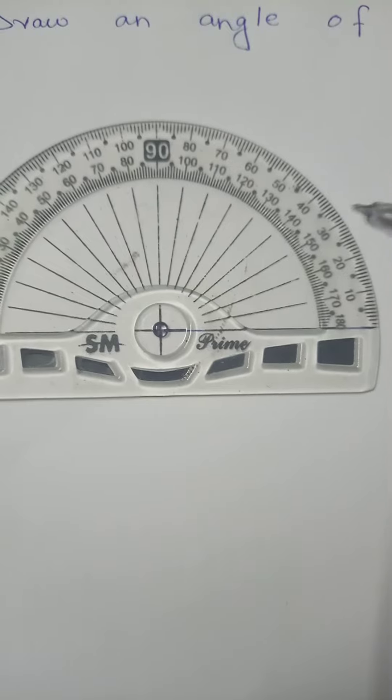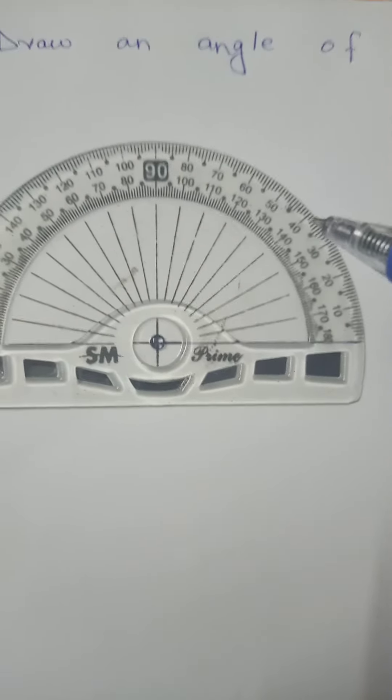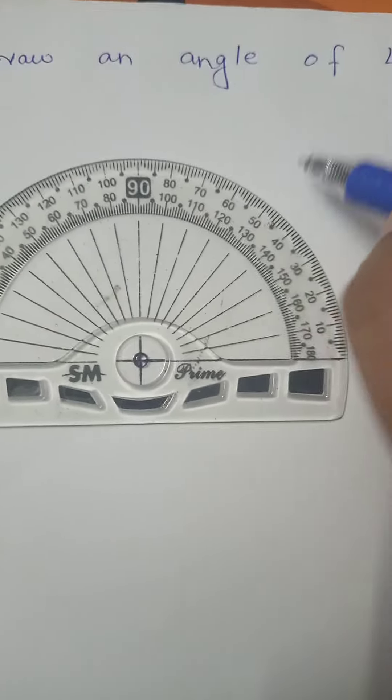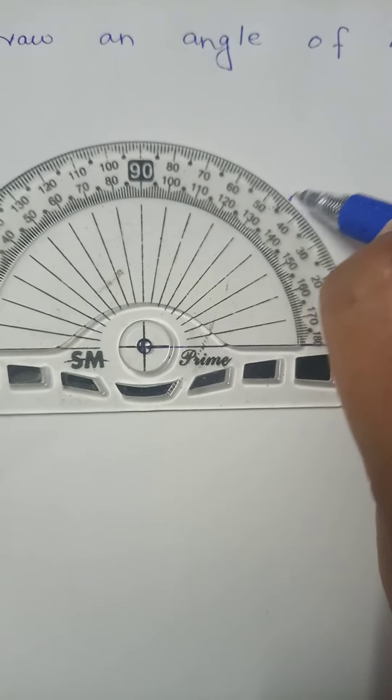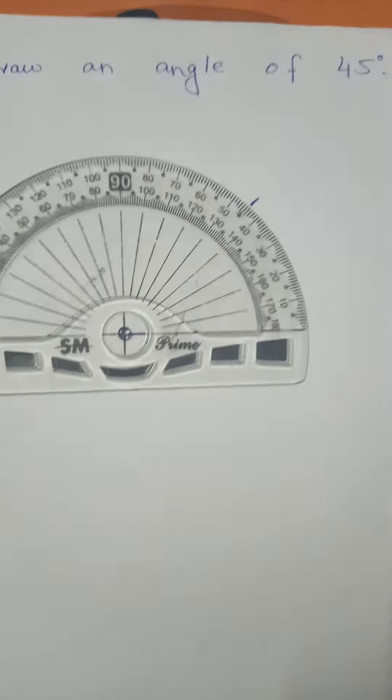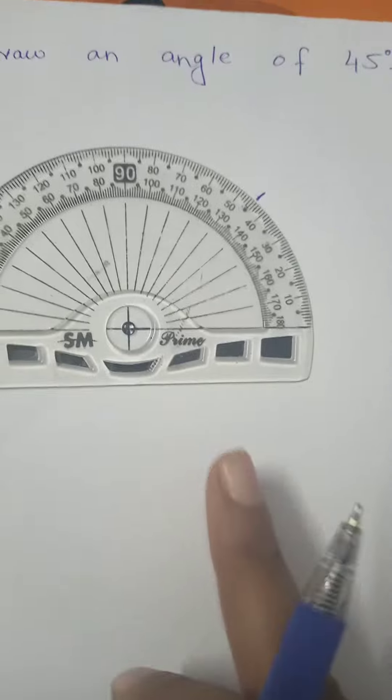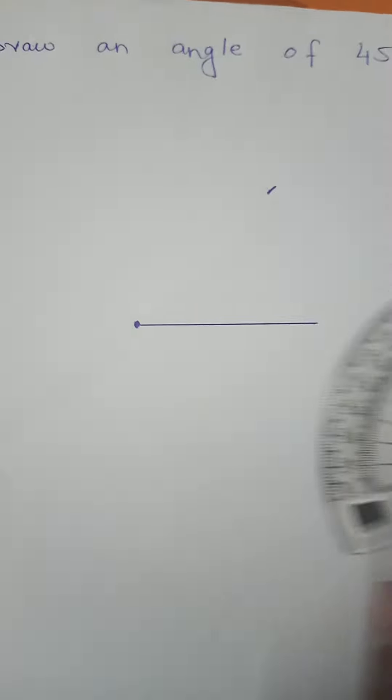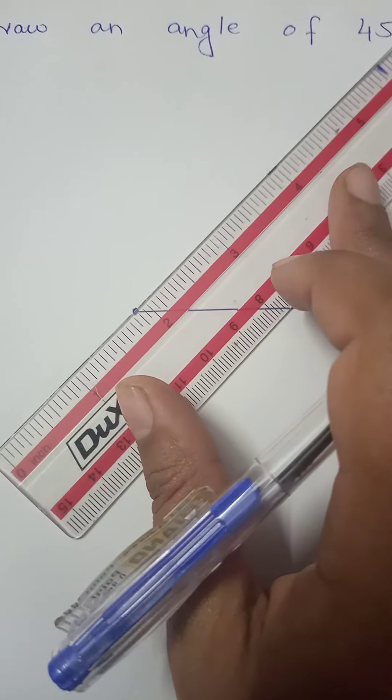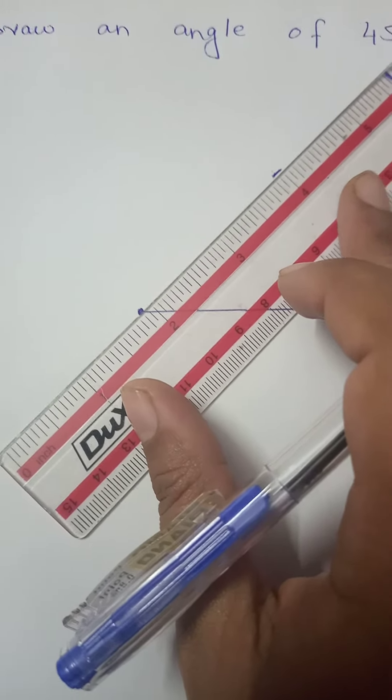10, 20, 30, 40... After 40 we have 5 lines: 1, 2, 3, 4, 5. This line is where we draw a small line. Let's draw a small line. You can easily use the scale and we add the same line.